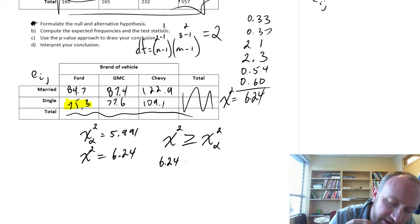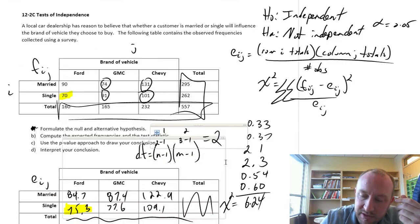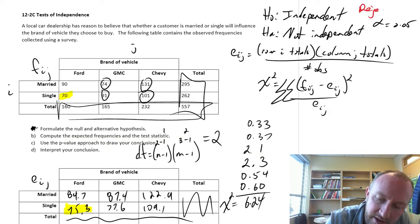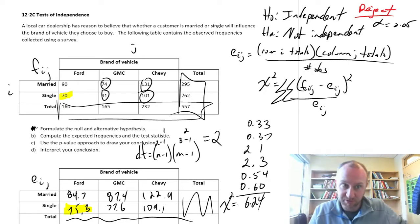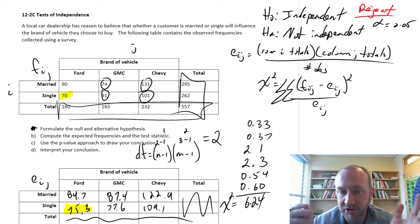We reject if that test statistic is greater than our critical value. Which, in this case, it is greater than that critical value. So we can reject. So using the critical value approach, we do have evidence to reject this null hypothesis. We have evidence to show that these two variables, marital status and the brand of vehicle, these two variables are not independent. Or, in other words, we have evidence to show that they are dependent on one another.